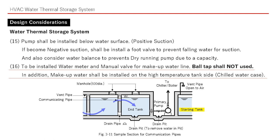A water meter and manual valve shall be installed for the makeup water line. A ball tap shall not be used. In addition, the makeup water inlet shall be installed on the high temperature tank side — meaning, for chilled water, consider the makeup water in the starting tank.